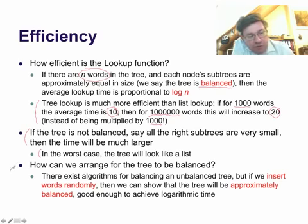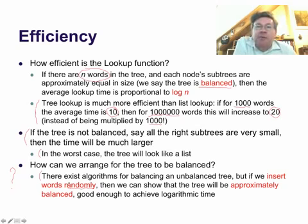So the question is, how can we arrange for the tree to be balanced? Because that's the situation we want for this to really work. There exist algorithms for balancing an unbalanced tree, but it's kind of complicated. But it turns out that chance is on our side. If we insert words randomly, we can show that the tree will be approximately balanced and good enough that we will already achieve the logarithmic time.